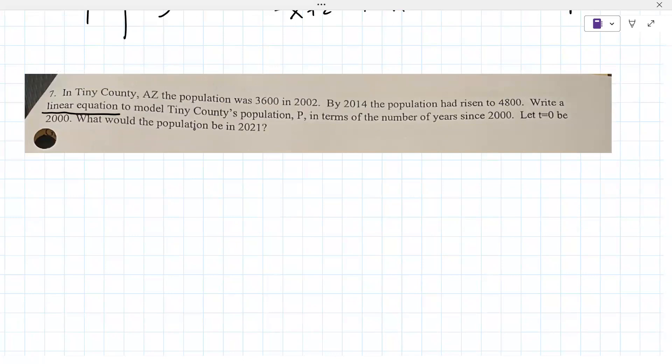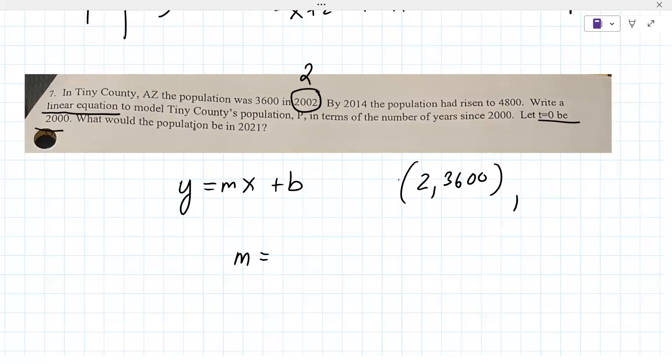Do you remember any equations of a line? Not off the top of my head. Here's the basic one. Y equals MX plus B. Yeah. To find the slope, you need two ordered pairs. So what you have to decide, is what are the ordered pairs? They tell you that T equals zero is 2000. So year 2000 is, 3,600 is the other part of it. Yes. That's one ordered pair. And then the second one is for 2014, 14 comma 4800. Could you calculate the slope?